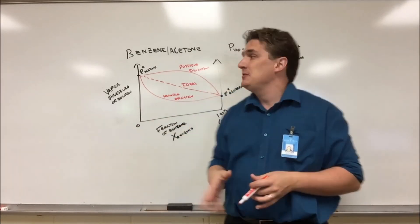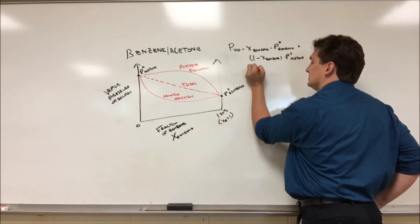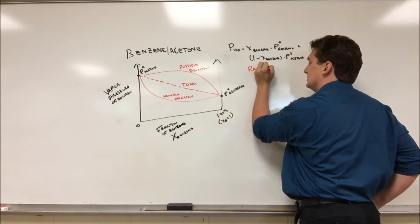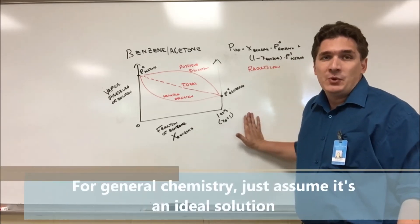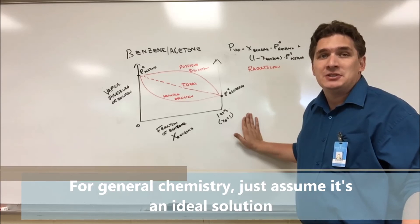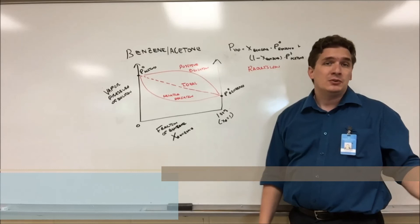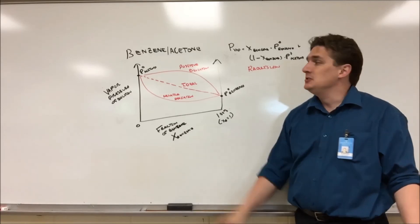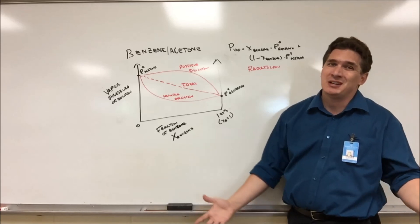So at the general chemistry level, we just assume everything follows this relationship, which we're gonna call Raoult's law. In the absence of any other information, we have to assume that the final pressure is just the sum of the individual vapor pressures weighted by how much of them are in solution. Only if you go to a higher chemistry course, if you take chemical engineering, do you actually have to worry about these positive/negative deviations. And typically what you find out is we just kind of have to go to tables.